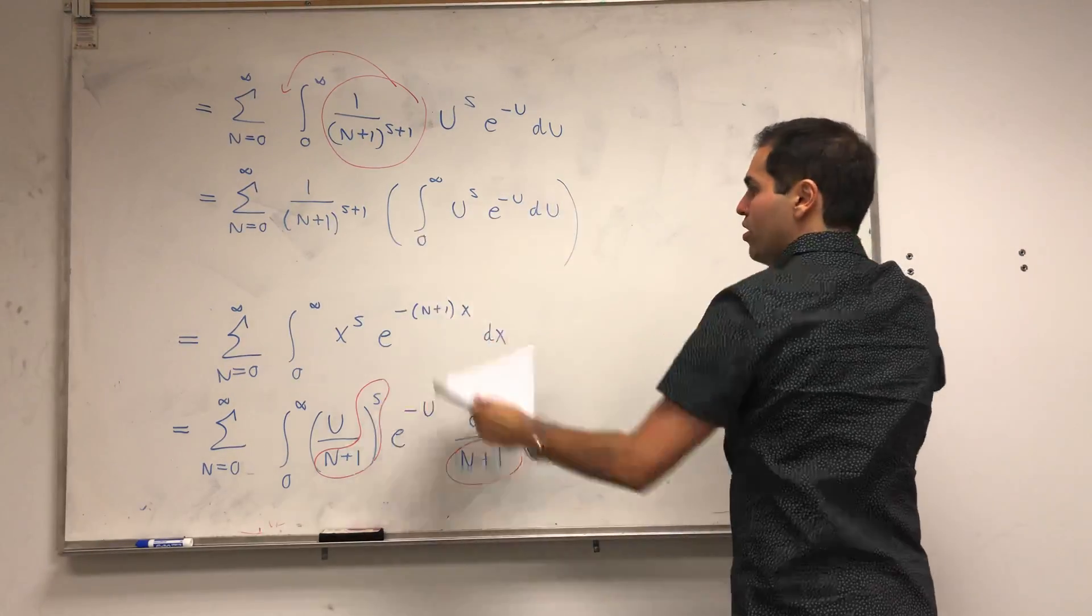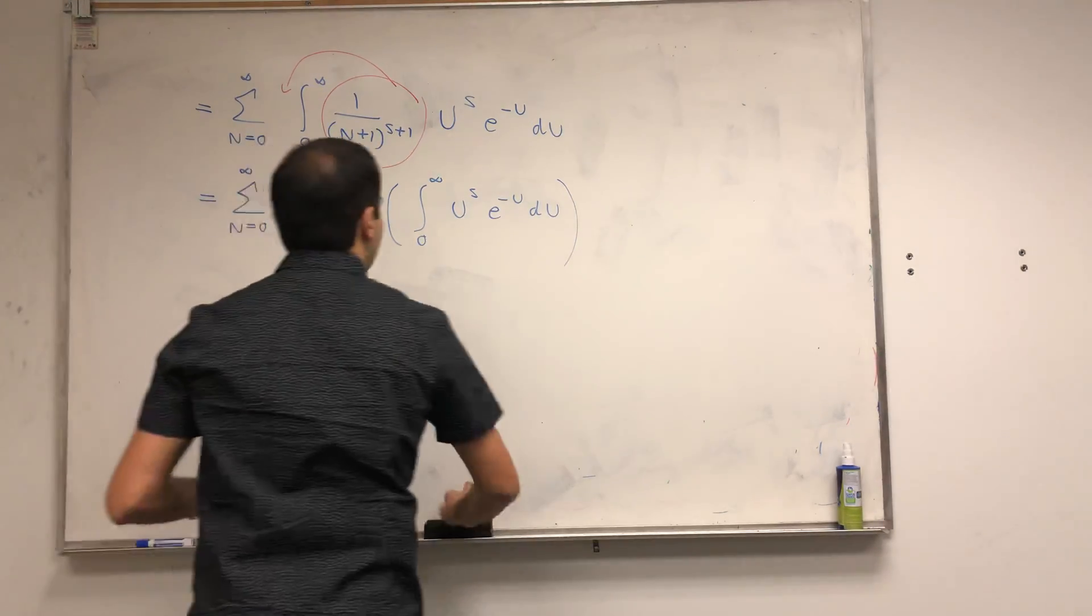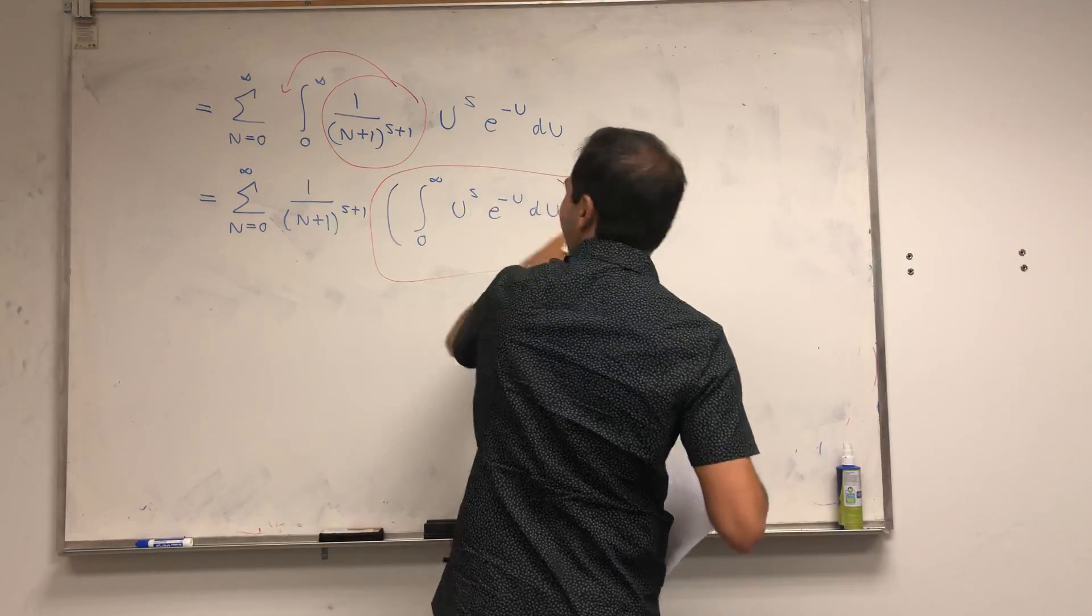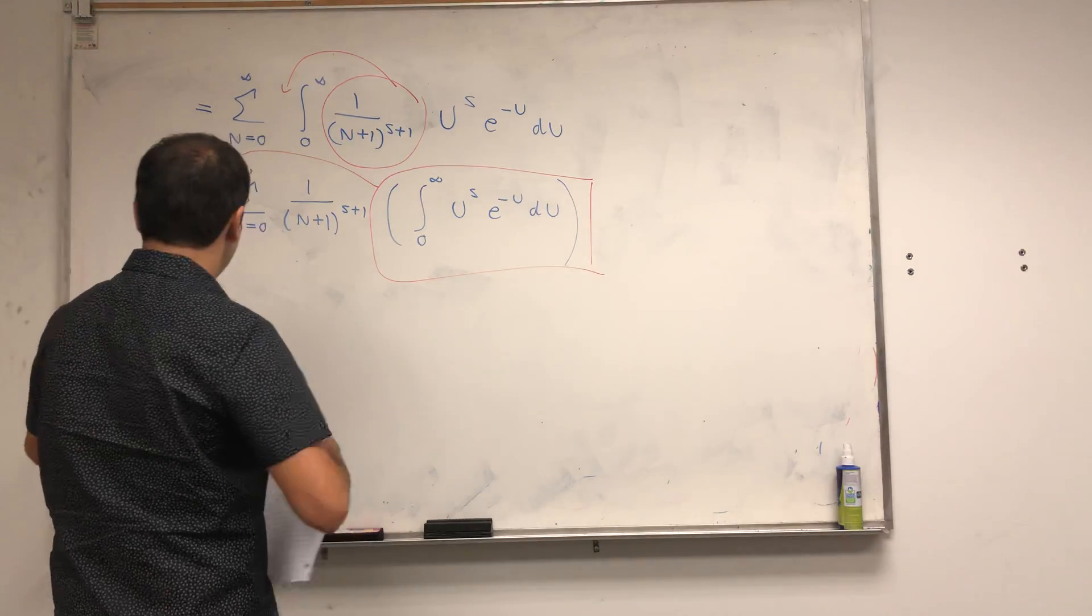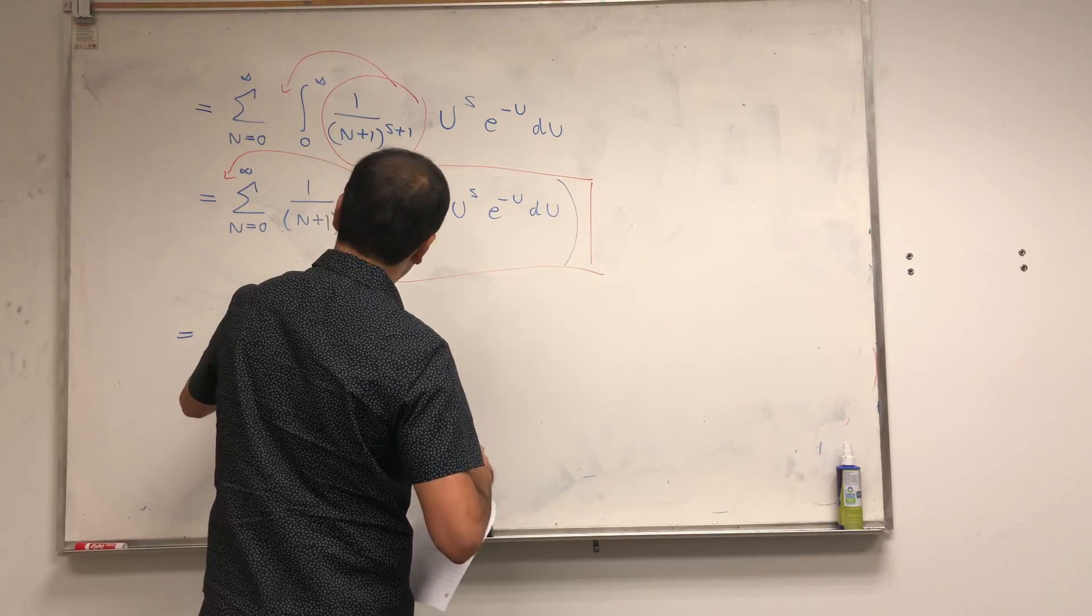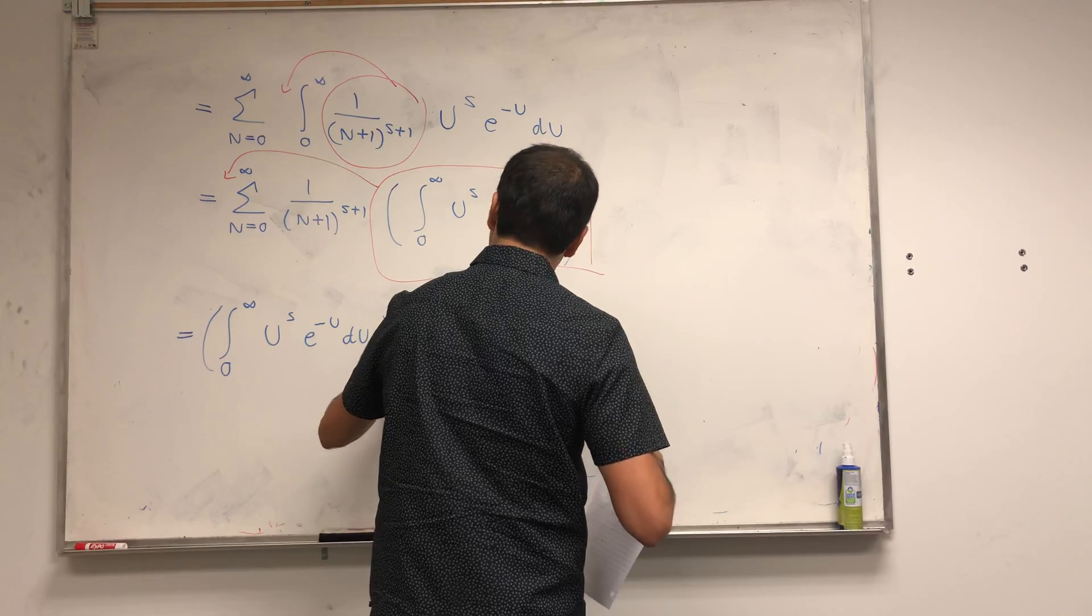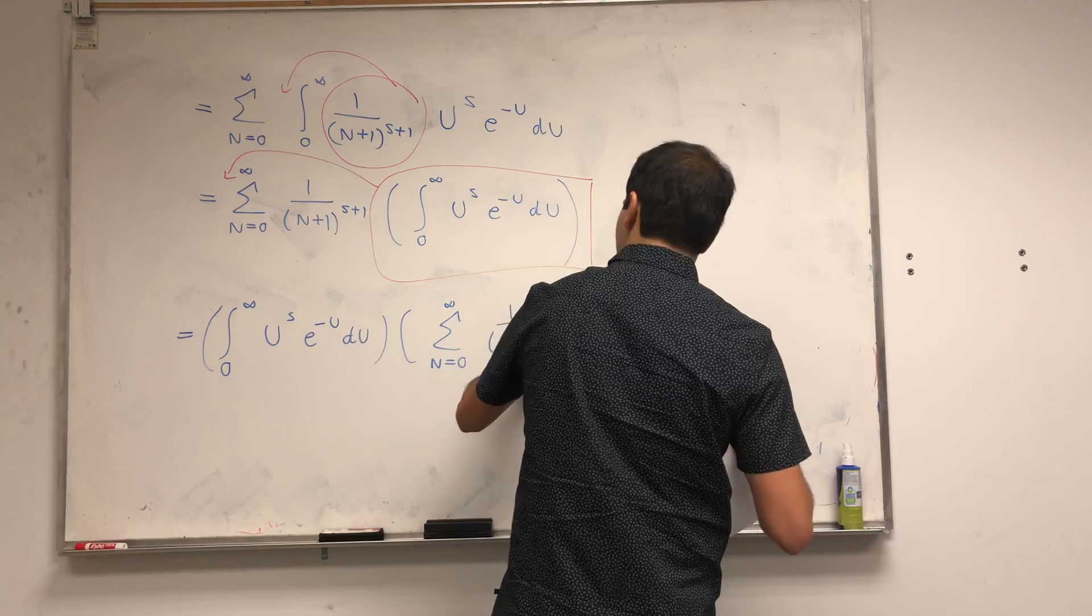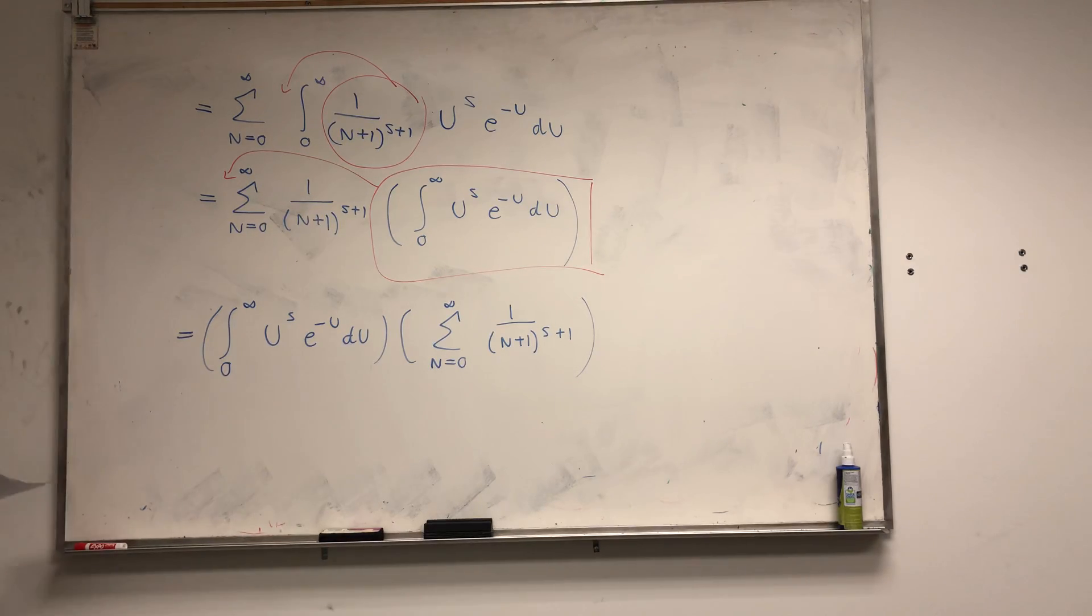And here's where the magic happens. This integral itself, it doesn't depend on n at all. So you can also pull it out. What we're left with is the following: integral from 0 to infinity, u to the s, e to the minus u du, times sum from n from 0 to infinity of 1 over n plus 1 to the s plus 1.